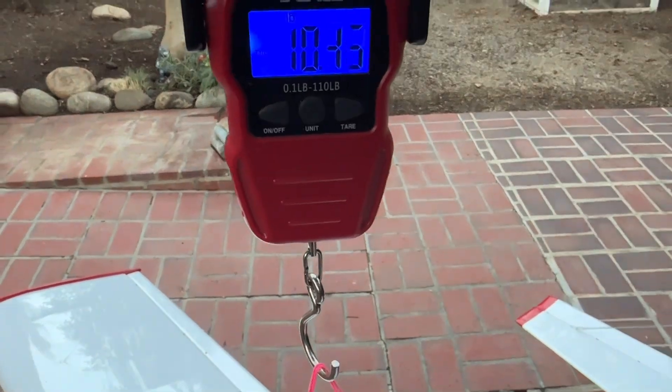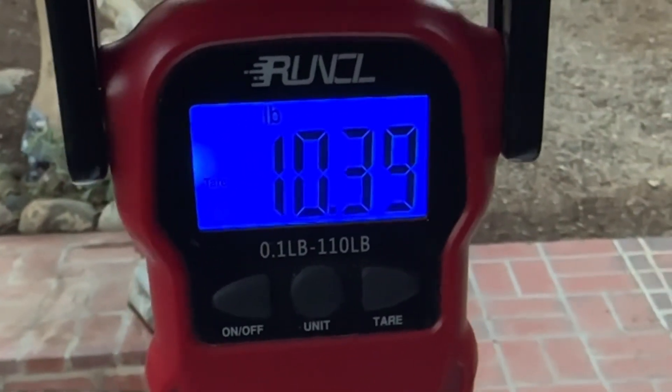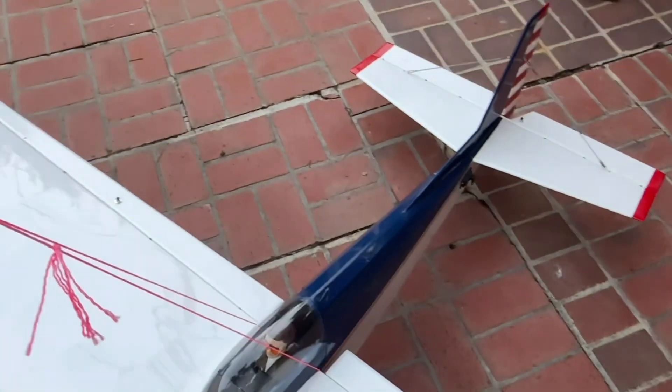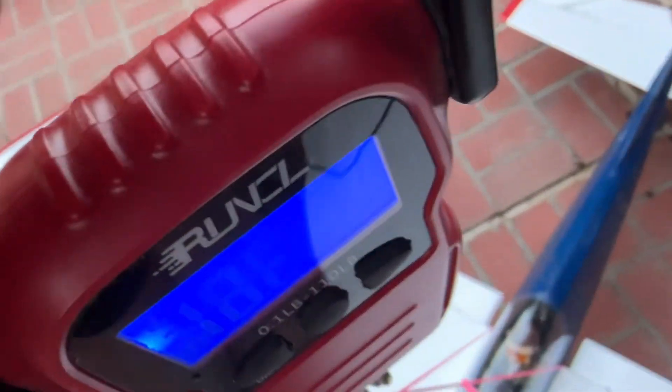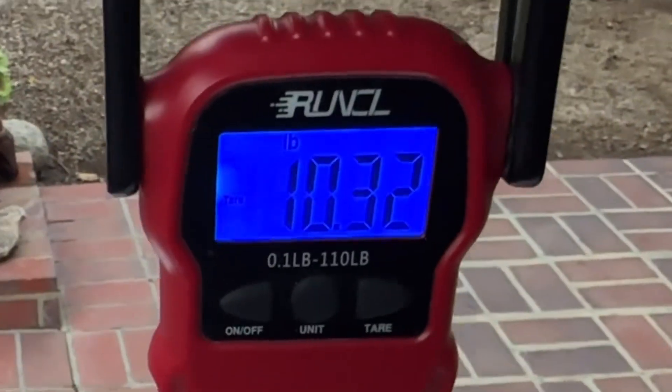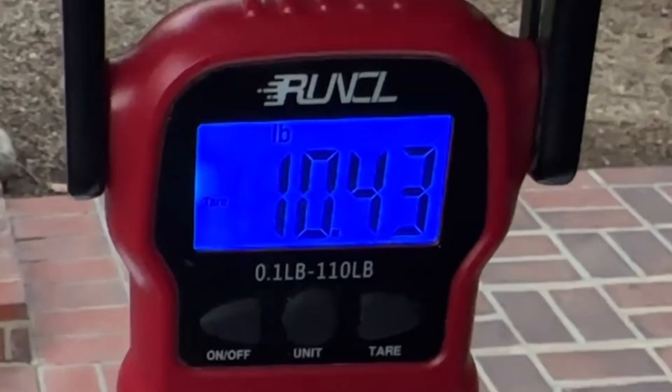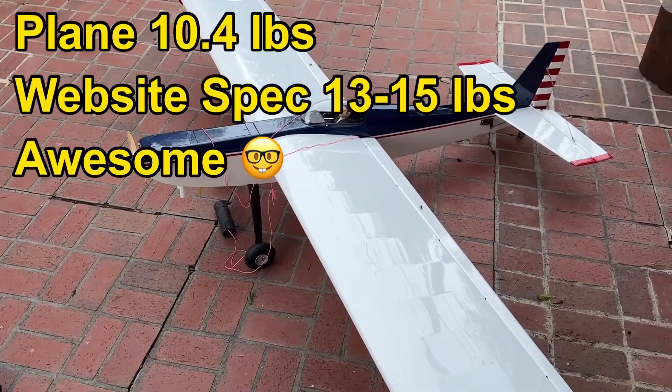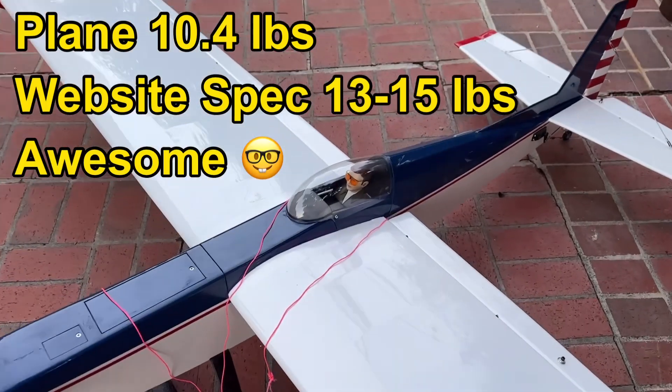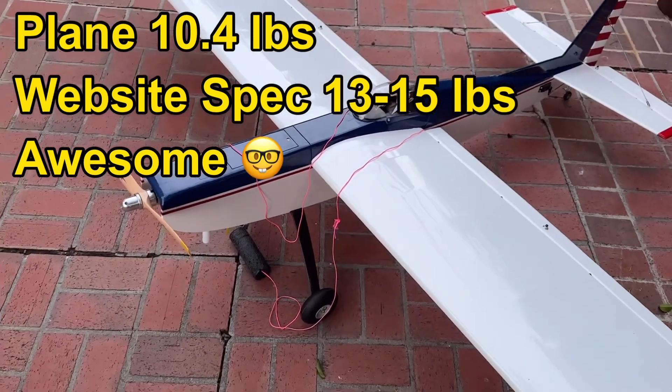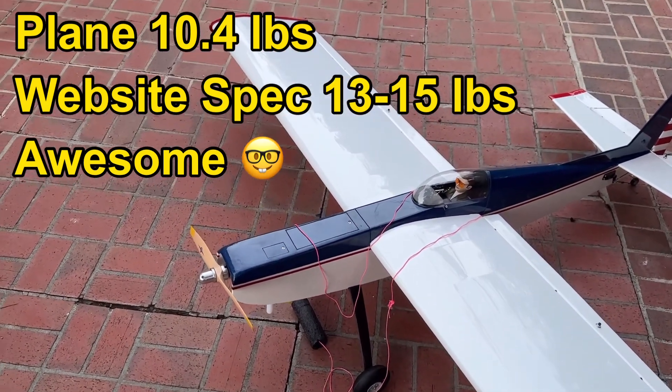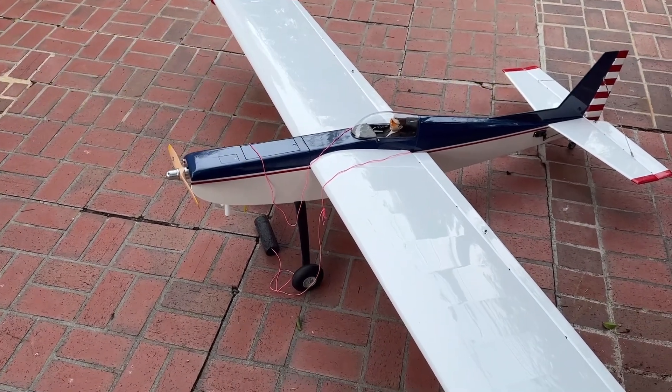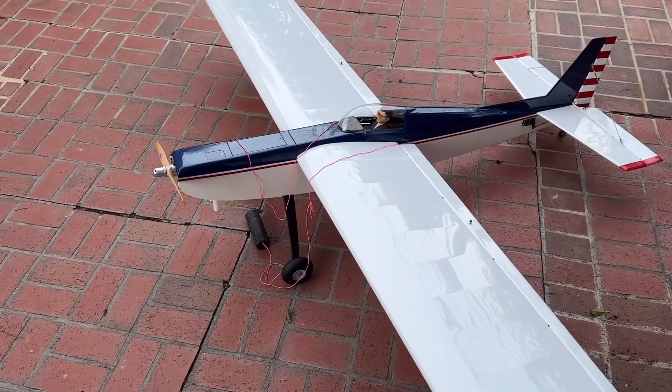And it is 10.3, 10.4. I'll call it 10.4. It looks like it's kind of bouncing around a bit because I'm moving. I'm actually happy with that because I know I did some modifications. I added the canopy. I added a different landing gear and this and that. But pretty much I added a few things to it. So it still came under the actual high limit of the weight. So I'm happy there.